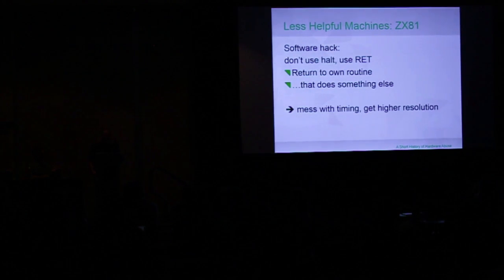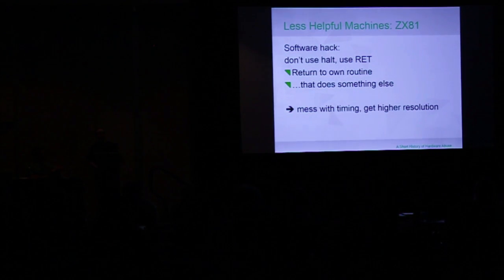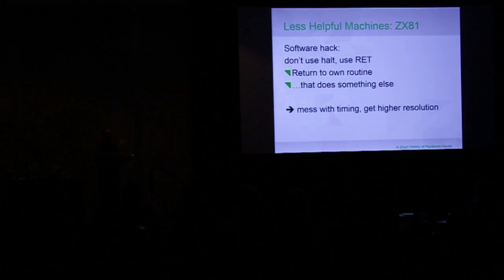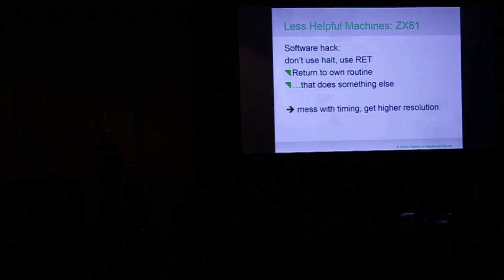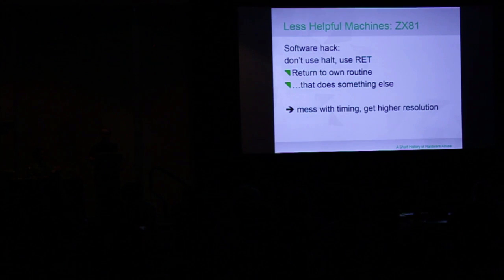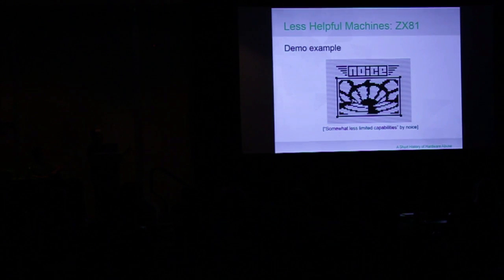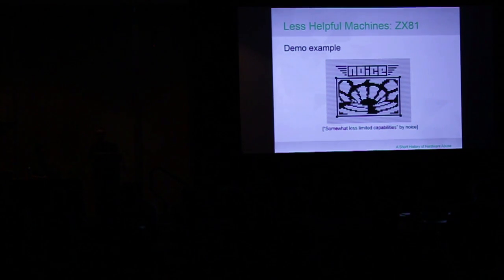You can do a little bit fancier things: generate your own frame buffers. Instead of using the HALT instruction, use RET — return to your own routine. This gave you some more compute time, let you mess with timing, some higher resolution, and actually let you get something that vaguely resembles graphics. There's this crazy guy who has made a number of demos — you should watch them, they're ridiculous.